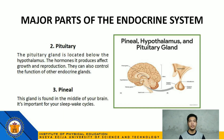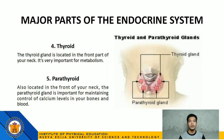Number 2: Pituitary — located below the hypothalamus; the hormones it produces affect growth and reproduction and can also control the function of other endocrine glands. Number 3: Pineal — found in the middle of our brain; important for our sleep-wake cycles. Number 4: Thyroid — located in the front part of our neck; very important for metabolism. Number 5: Parathyroid — also located in the front of our neck; important for maintaining control of calcium levels in our bones and blood.